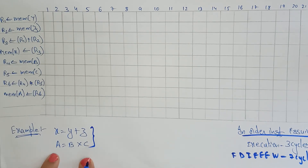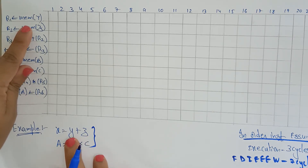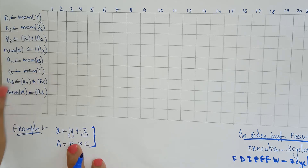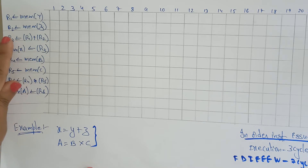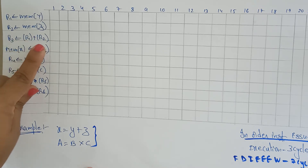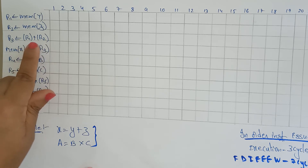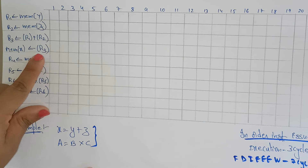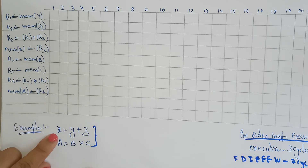These high-level language statements need to be converted into assembly language code first. So: the memory of y — the address location where variable y is stored — is moved to register r1. R1 now contains the address of y. The memory of z is moved to register r2; r2 contains the address of z. Then the content of r1 plus the content of r2 — both values are added — and the result is stored in r3.